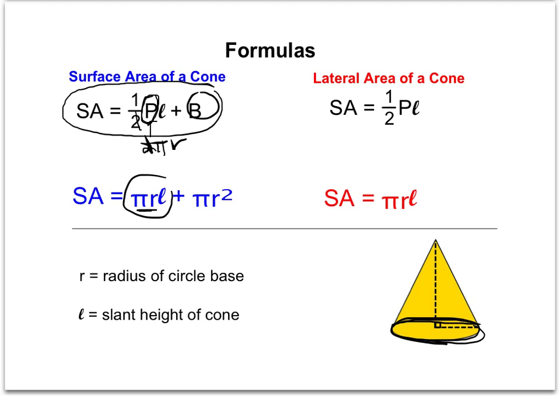Then my base, my B in the formula, is replaced by the area of my base, and the area of the circle is πr².